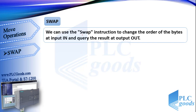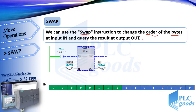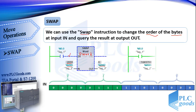Alright, let's see the last instruction: swap. We can use the swap instruction to change the order of the bytes at input IN and query the result at the output. The swap task is different. This instruction just works with word and double-word data, which use 16 and 32 bits. Here we have number 2000 at input and 0 at MW2 address. Let's see what happens when this contact activates the swap instruction.